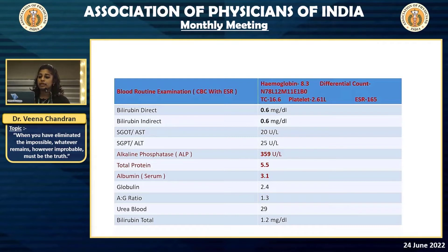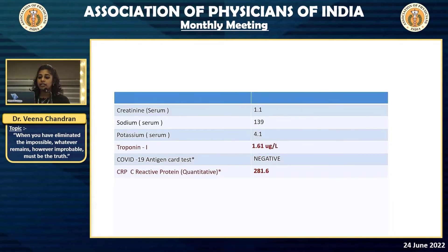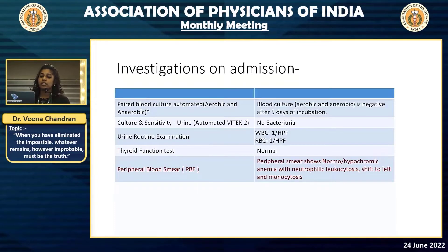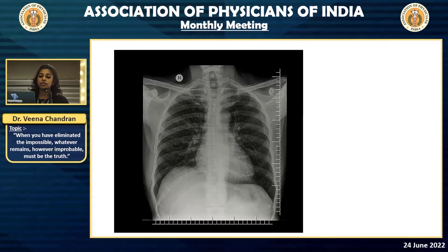His troponin was positive at 1.6, and CRP was grossly elevated at 281. The initial blood culture reports came back negative after 5 days. Urine cultures were also negative. Thyroid function tests were within normal limits. Peripheral smear showed neutrophilic leukocytosis with shift to the left and monocytosis. The initial chest X-ray showed slight bronchovascular markings but nothing to explain the elevated CRP.